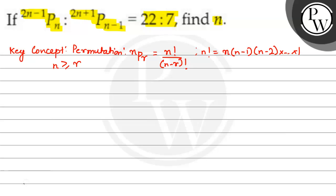So, this question specifically goes on. The expression is 2n minus 1 P_n is to 2n plus 1 P_{n minus 1} is equal to 22 is to 7.